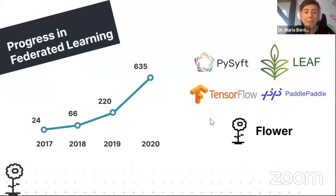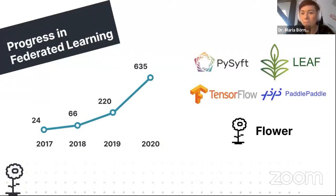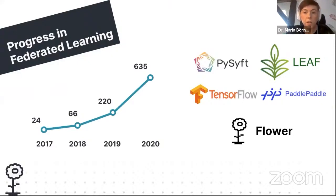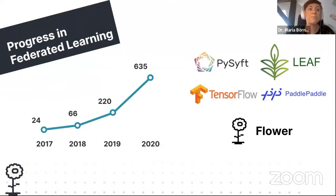Federated learning was introduced in 2017. We counted the number of papers on arXiv, which was 24 papers, and it increased exponentially over the last years. Last year there were 635 papers on federated learning, which is quite impressive.